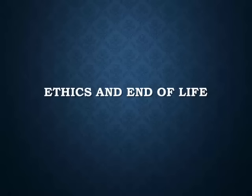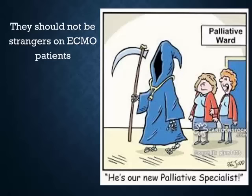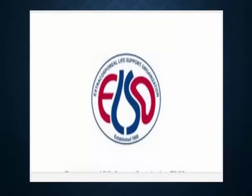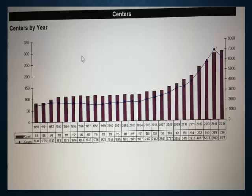On the ethics of ECMO: other centers have more robust procedures around ethics and end-of-life care. Palliative care should be involved early — not just when there's a brain bleed. Patients and family members need to understand the stage they're at with ECMO. The ELSO registry — the Extracorporeal Life Support Organization — carries the database for all registered ECMO centers, though many centers doing ECMO are not registered, which limits data sharing and outcome assessment.